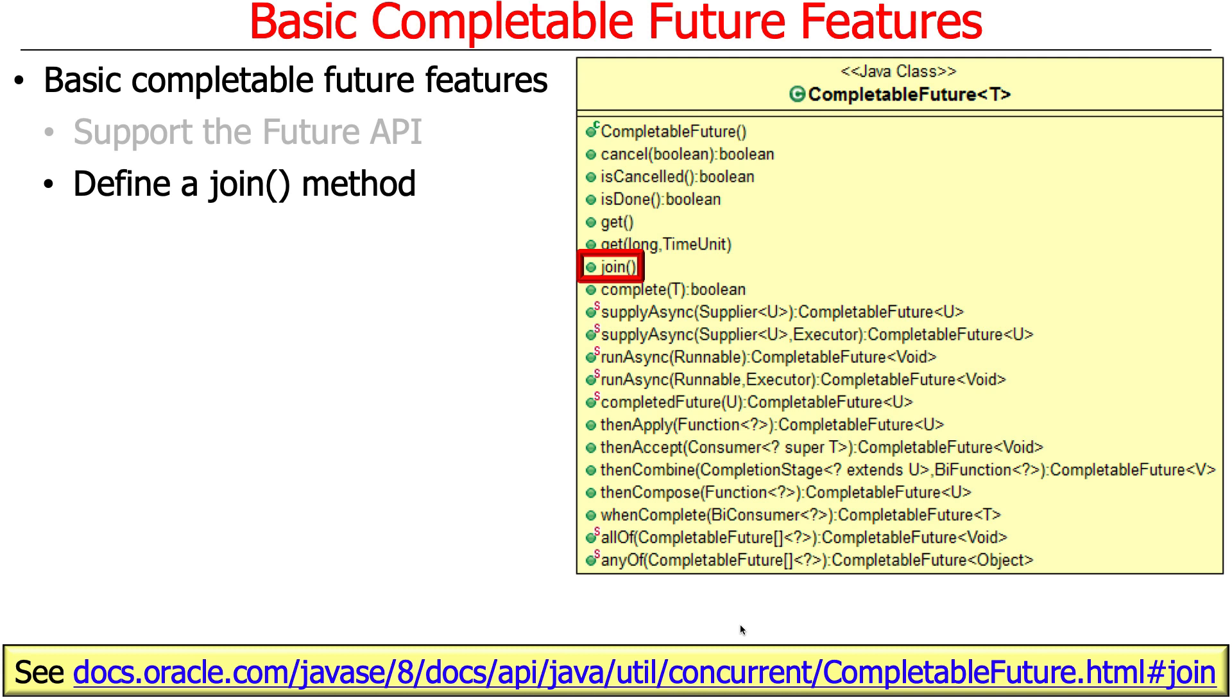Another thing that the basic features in completable futures do is they define something called a join method. If you recall, get was the classic way you would get the result back when an asynchronous computation finished. The downside with get was it used something called checked exceptions. So you had to put these exception try-catch blocks in your code or put them in your method signature as a throw spec in order to handle the checked exception. And that gets really awkward.